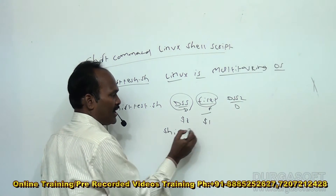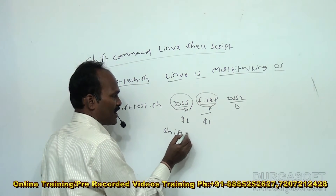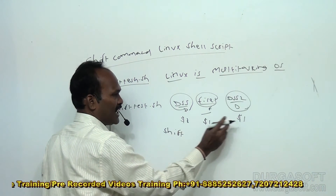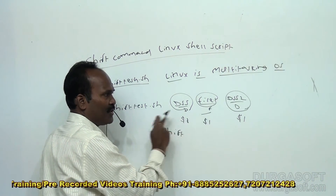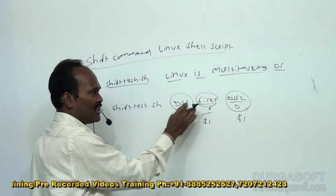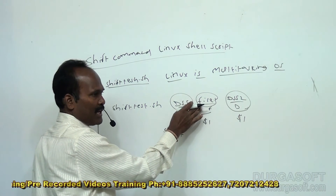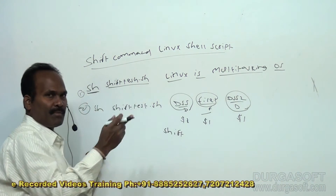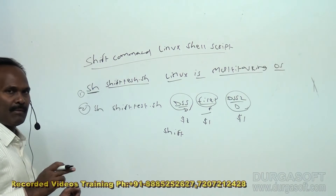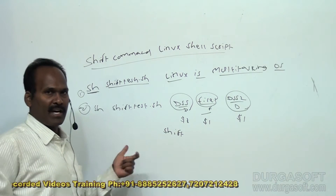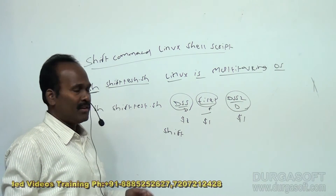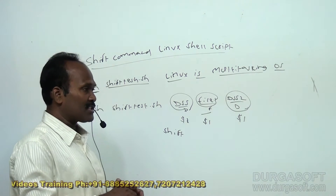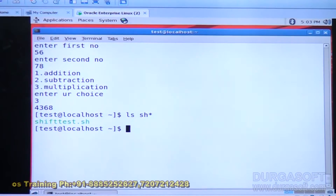When you say the shift command again, the next argument becomes dollar one. This is the shifting mechanism for command-line parameters, so that one command-line parameter can be read at a time.